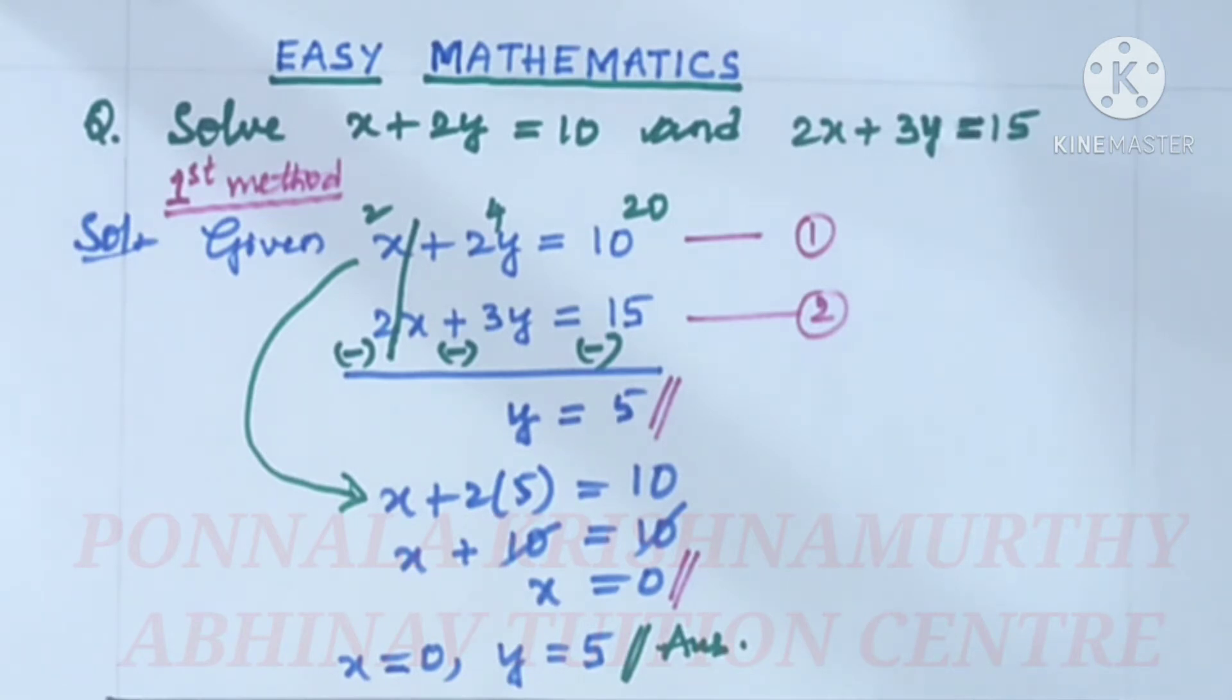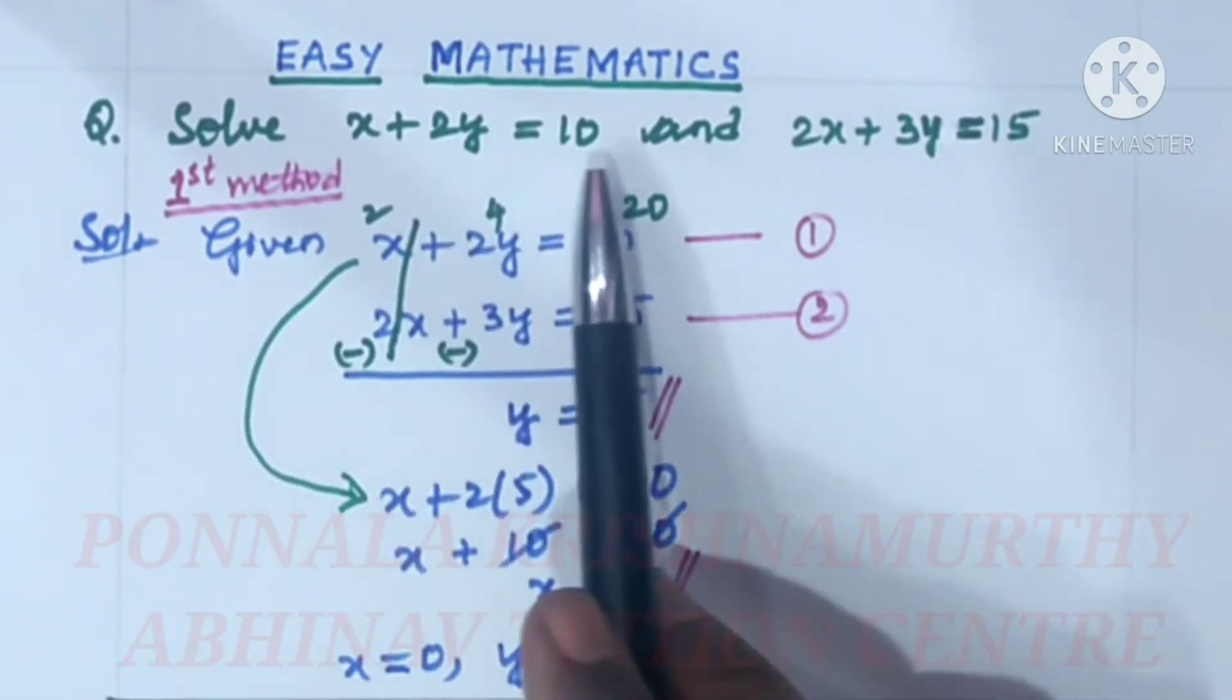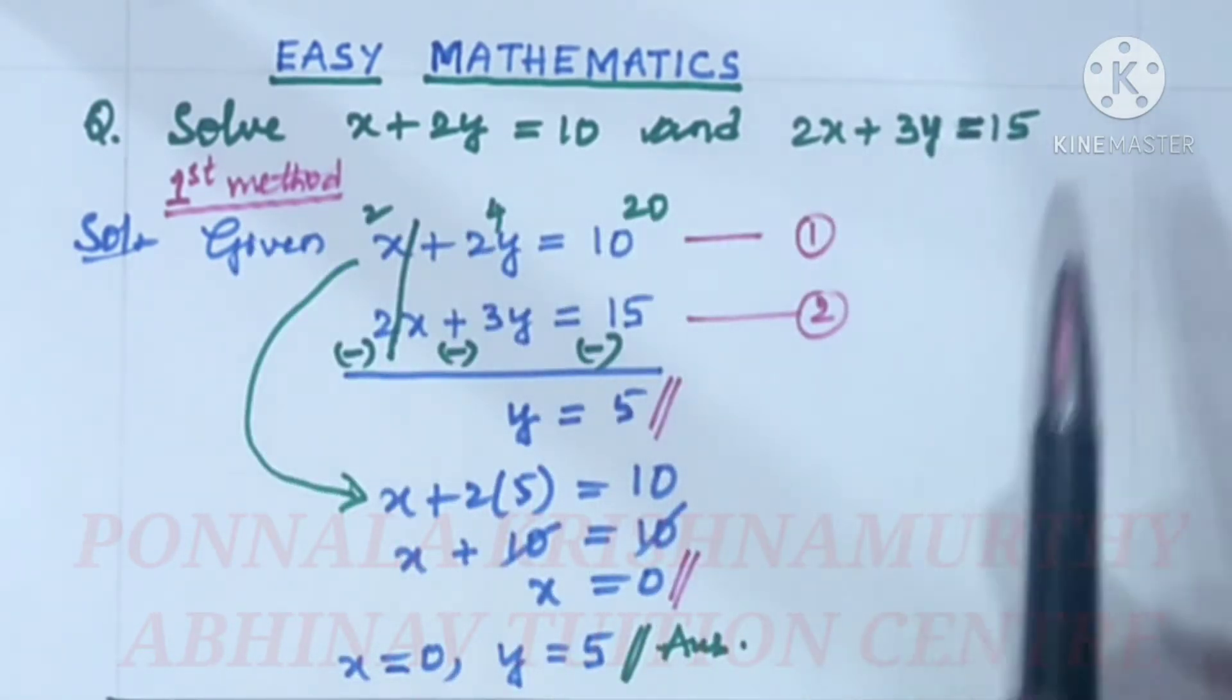Dear students and friends, I am Panola Krishnamurthy, Abhinav Tuition Center, New Boe in Palli, Shikandrabad. Easy mathematics. Solve x plus 2y equal to 10 and 2x plus 3y equal to 15.